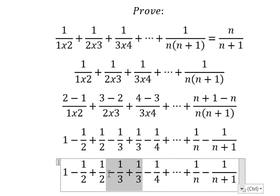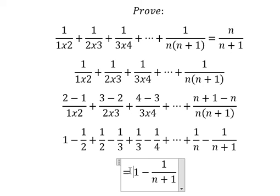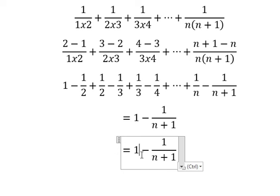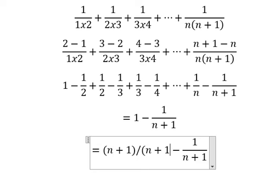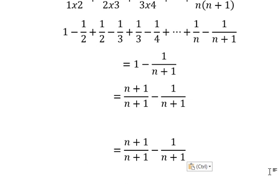Now if we repeat the process we just have only like this. Now number 1 we can do a common denominator, that is n plus 1 over n plus 1.